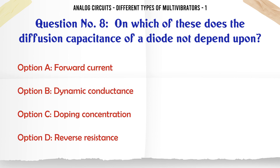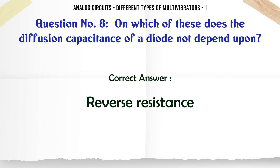On which of these does the diffusion capacitance of a diode not depend upon? A: Forward current. B: Dynamic conductance. C: Doping concentration. D: Reverse resistance. The correct answer is reverse resistance.